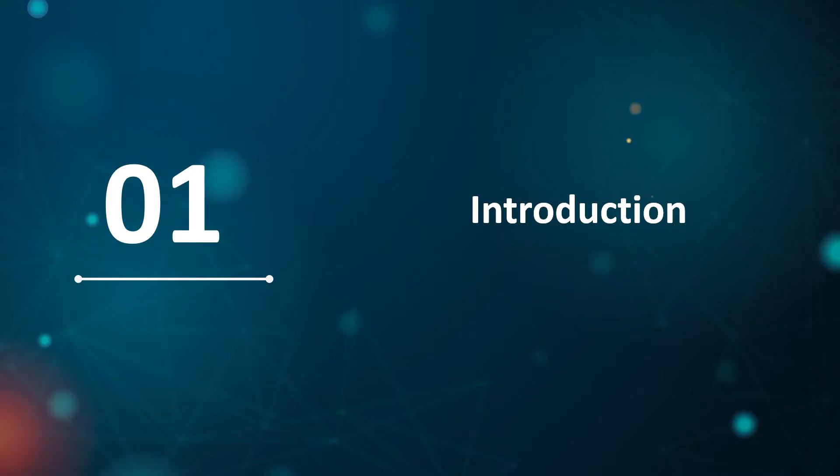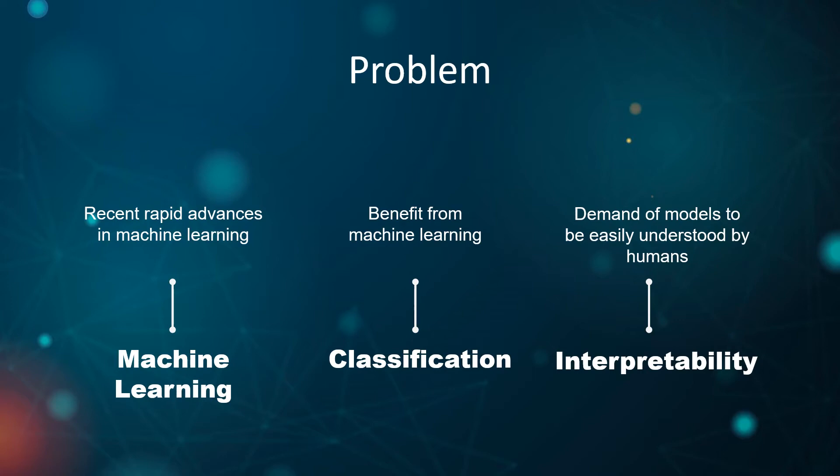Let's move to the introduction. The world has been experiencing rapid advances in machine learning. Most machine learning algorithms are opaque, unable to explain why decisions were made. As machine learning is increasingly used to make decisions, there is a demand for these decisions to be explainable.